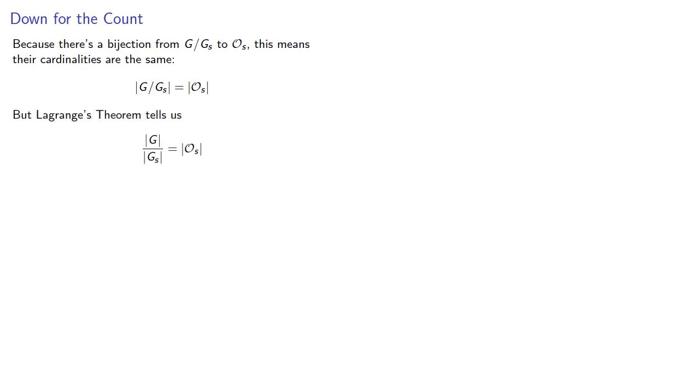And this leads to an important result. Because there's a bijection from the set of cosets into the orbit, this means their cardinalities are the same. But Lagrange's theorem says that the number of cosets is the order of the group divided by the order of the subgroup.